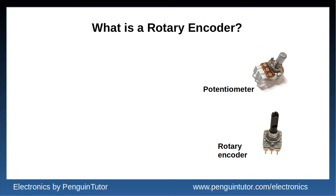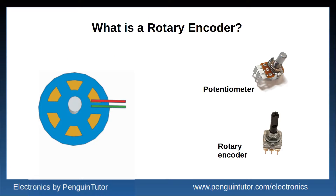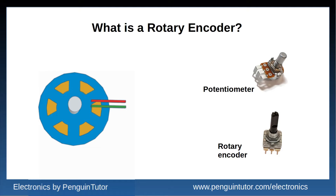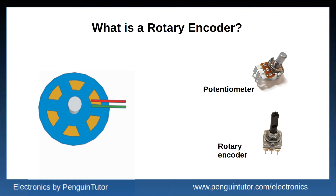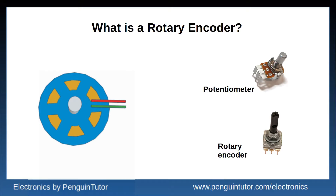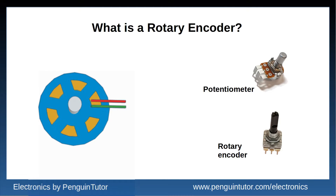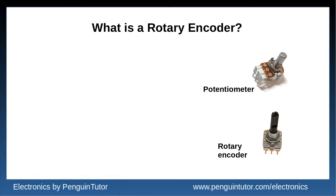So first of all, what is a rotary encoder? It's a way of measuring rotary position or motion. In this example it's going to be used as an alternative to a potentiometer. When you look at a potentiometer and a rotary encoder they look very similar — they both have a rotary shaft and often the same number of pins — but the way they work and how they are used is very different.